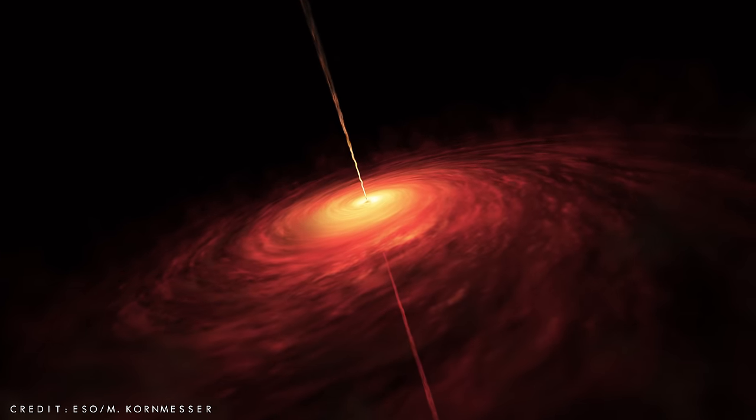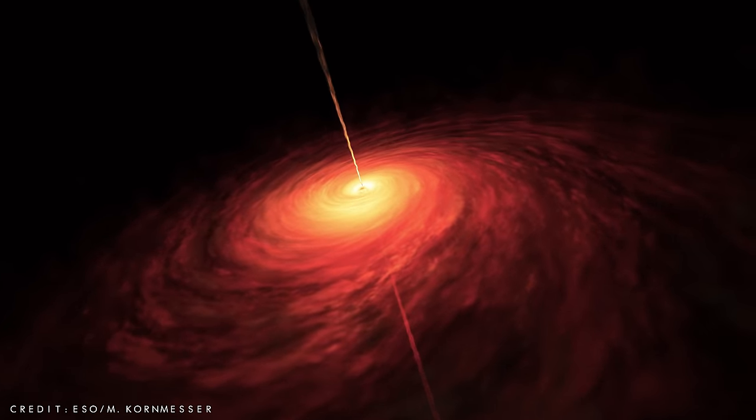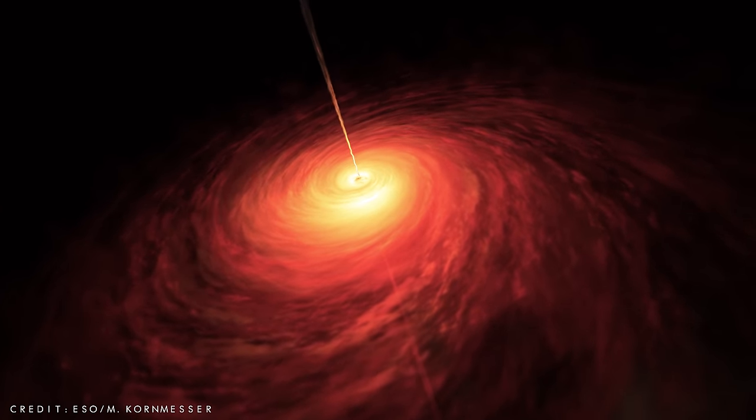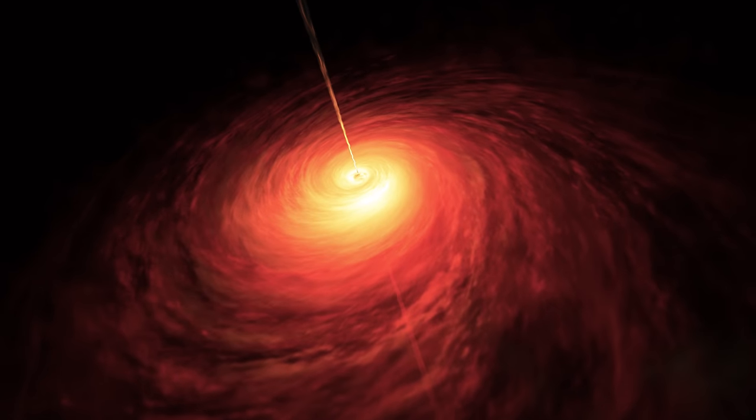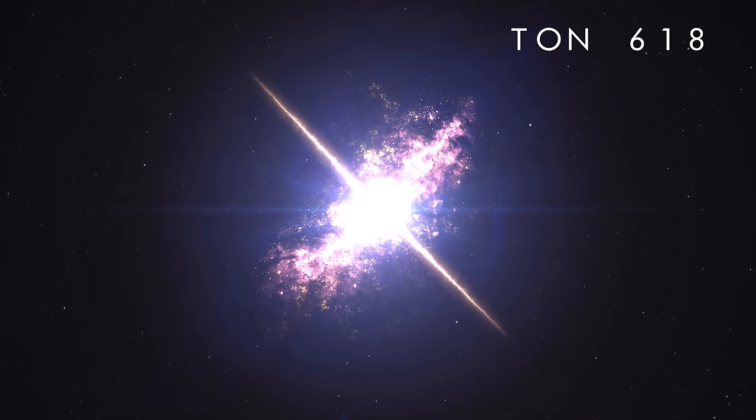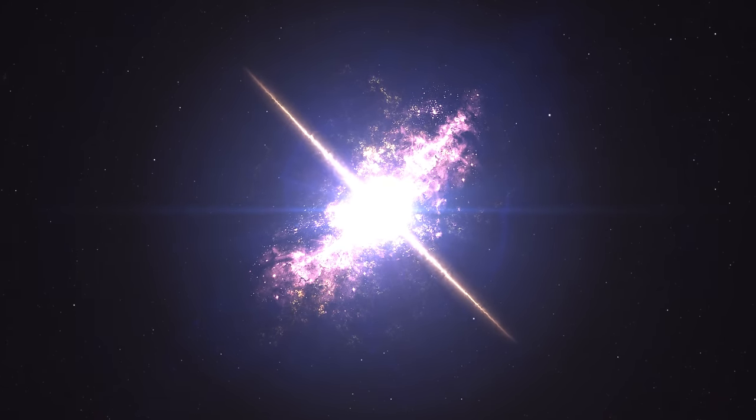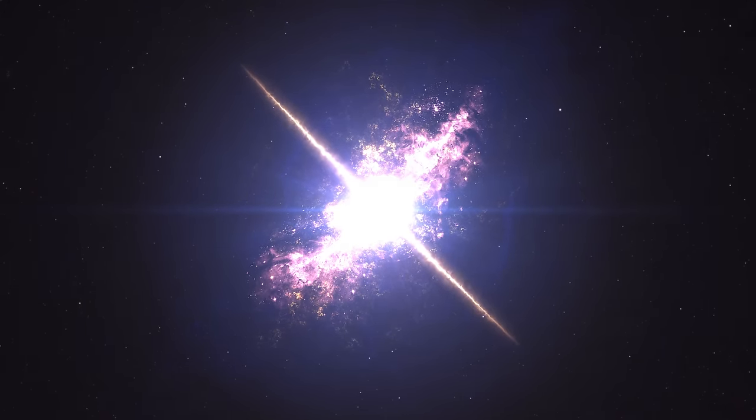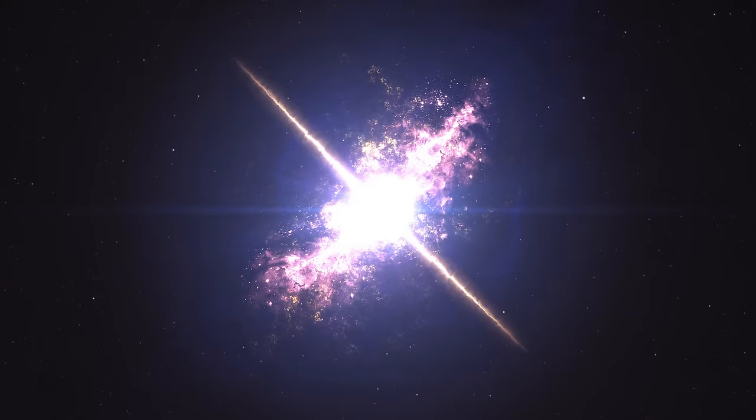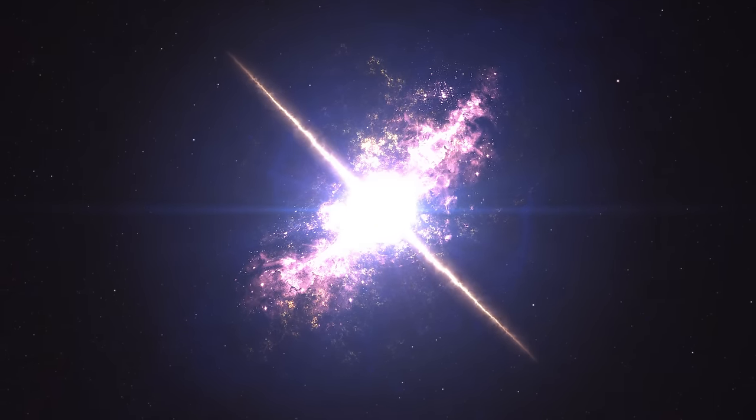But although this supermassive black hole is truly gigantic, it is nowhere near the largest currently known to exist in the universe. This is TUN 618, which is more accurately classed as a quasar, an extremely luminous jet of light at the centre of a distant galaxy. But hidden within this immensely bright object is believed to be an ultra-massive black hole.